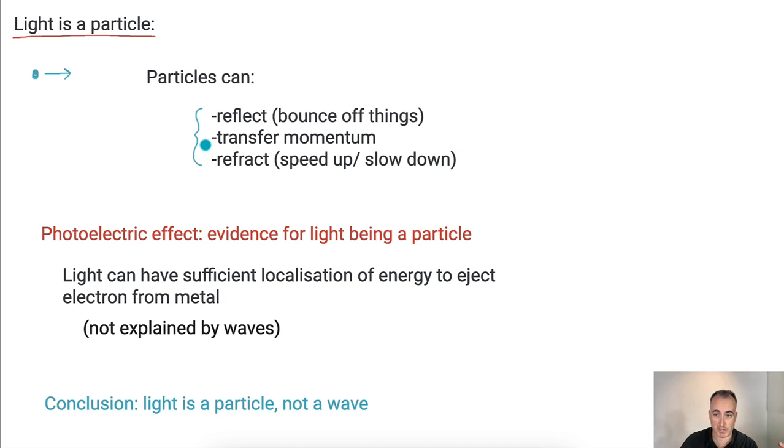So for example, if you're in a bathtub or something and you look down at your arm in the water, it looks like your arm is actually bent. It's not. It's just refraction that did that. So we think, yay, light must be a particle.